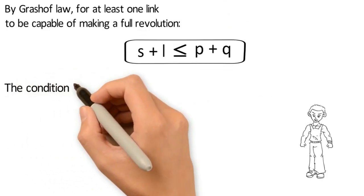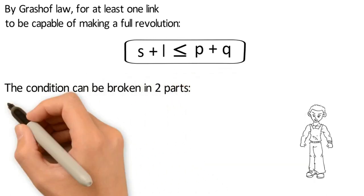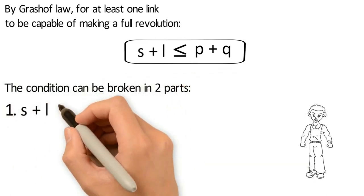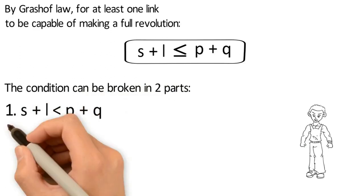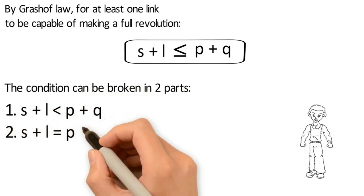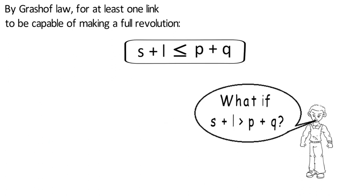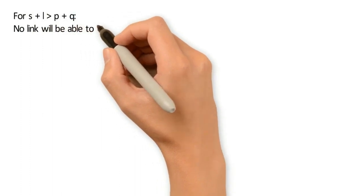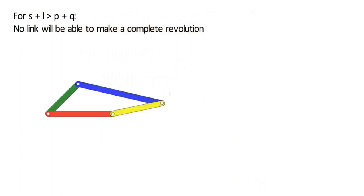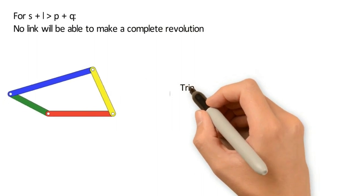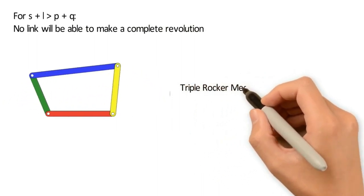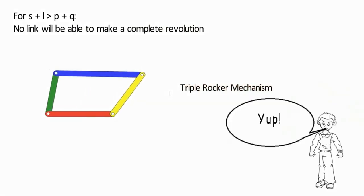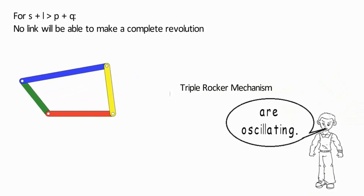The condition can be broken into two parts. First, S plus L is less than P plus Q. Second, S plus L equals P plus Q. What if the sum of the shortest and longest link is greater than the sum of the other two links? For S plus L greater than P plus Q, no link will be able to make a complete revolution. The mechanism so obtained is known as the triple rocker mechanism. All three links other than the fixed link are oscillating.